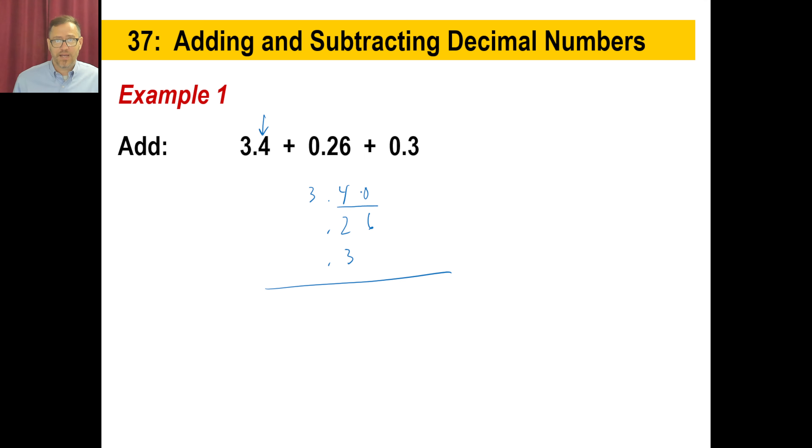4 out of 10 is the same thing as 40 out of 100. This is 0.26, 26 hundredths. And then this is 3 tenths. If you want to write a zero here, you can. That's perfectly logical, because 3 tenths is the same thing as 30 hundredths. But you don't need to do that. 0 plus 6 plus 0 is 6. 4 plus 2 plus 3 is 9. 3.96 is your answer.